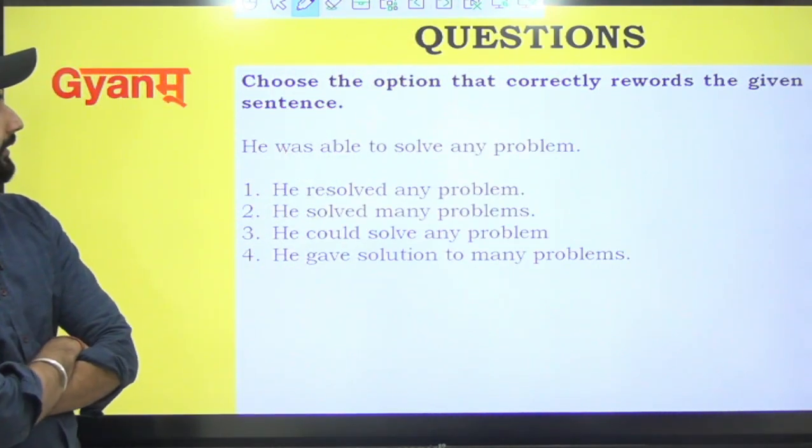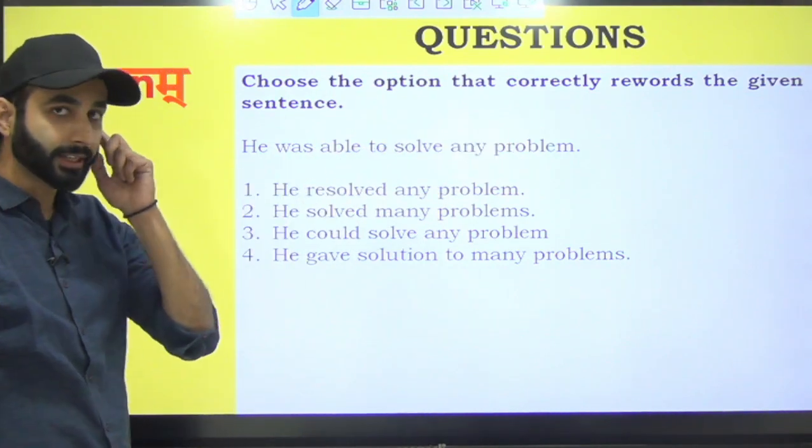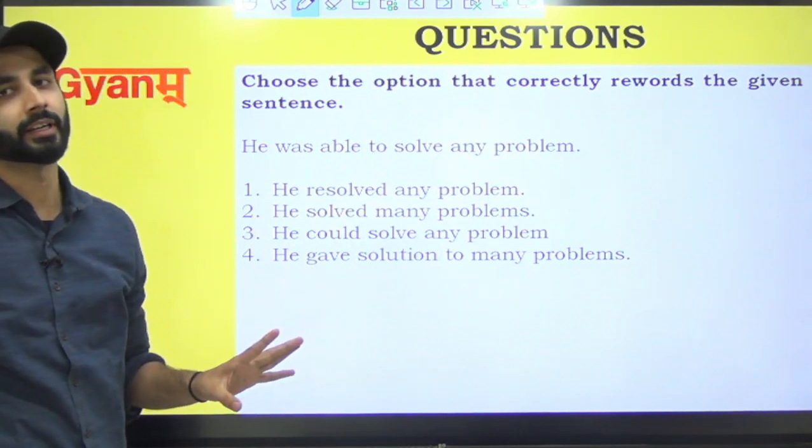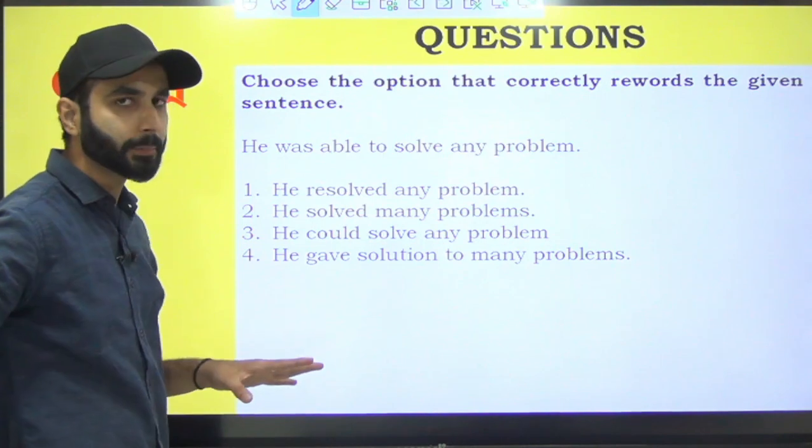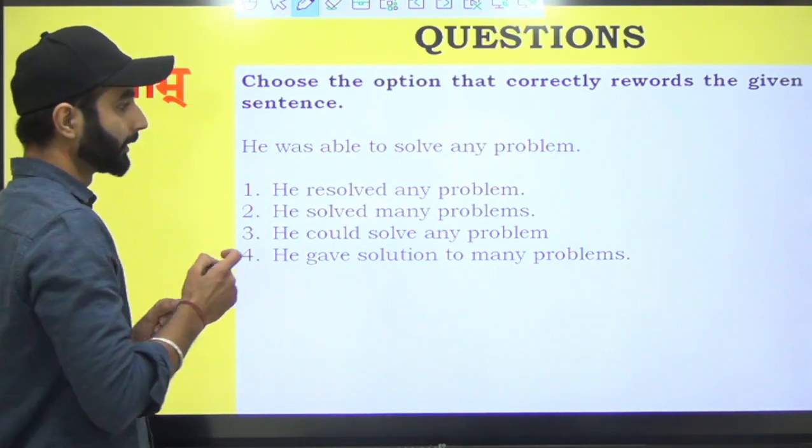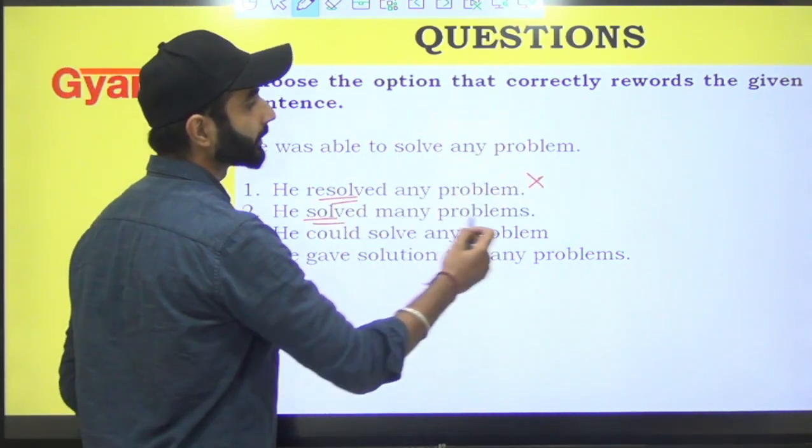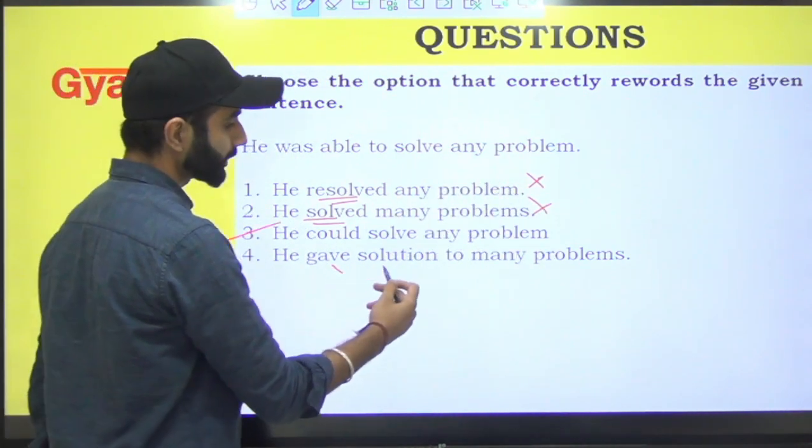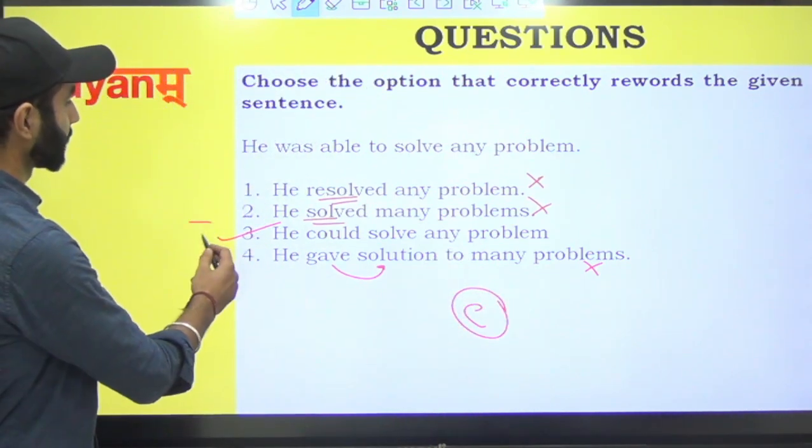Next, choose the option that correctly rewords the given sentence. He was able to solve any problem. Matlab wo kaafi intelligent tha ki wo kaisi bhi problem solve kar leta tha. So he resolved? No, he didn't solve it yet. He was able. He could solve any problem. Yes. Solution nahi diya tha abhi. So answer kya aaya? C, option number three.